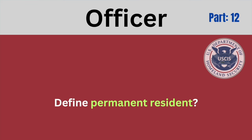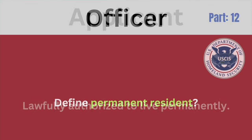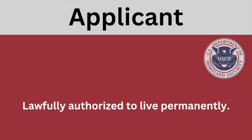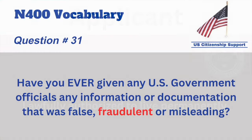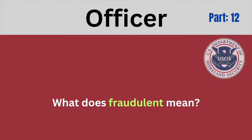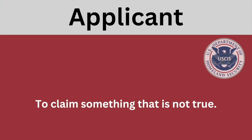Define permanent resident. Lawfully authorized to live permanently. Have you ever given any U.S. government officials any information or documentation that was false, fraudulent, or misleading? No. What does fraudulent mean? To claim something that is not true.